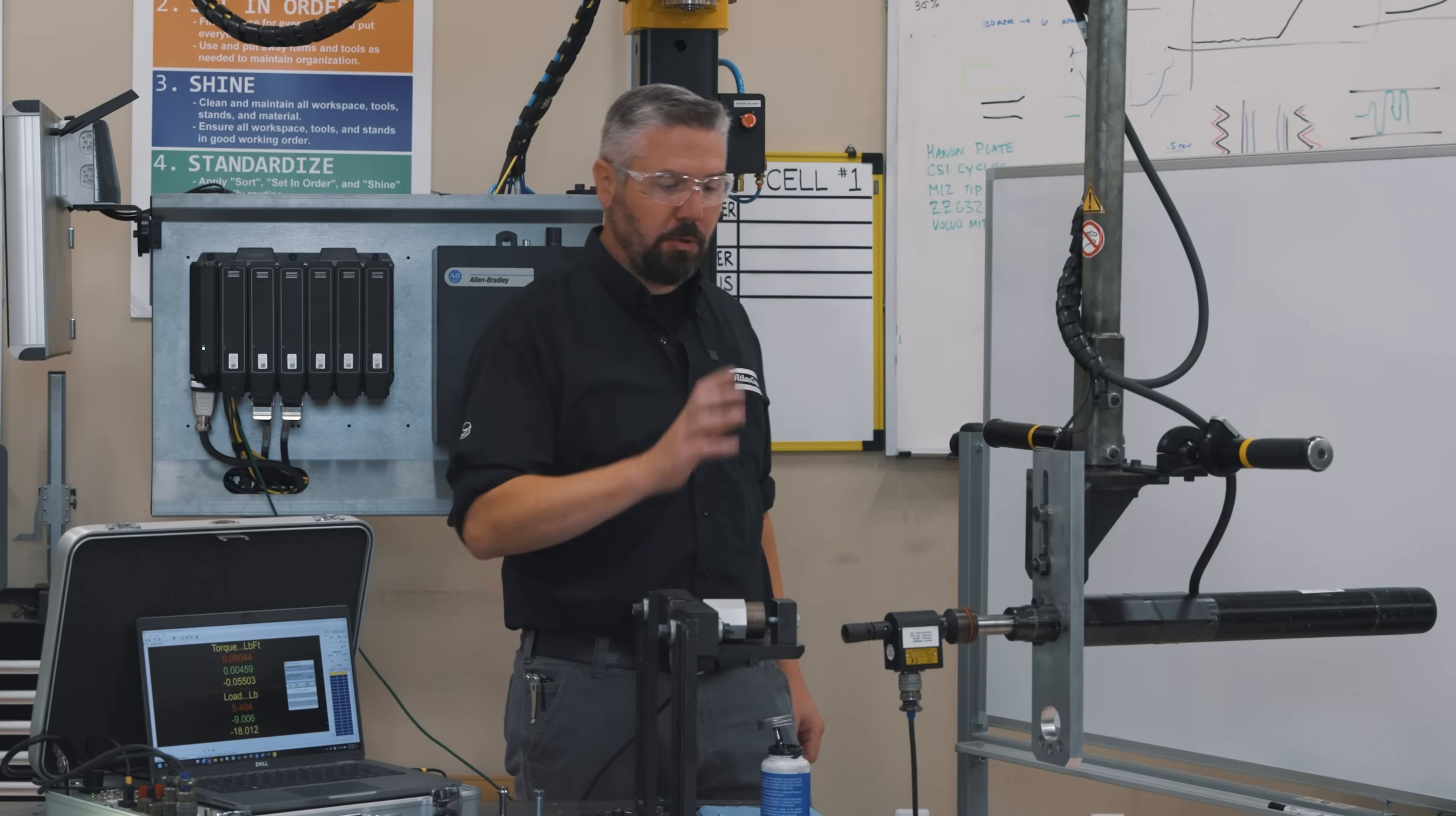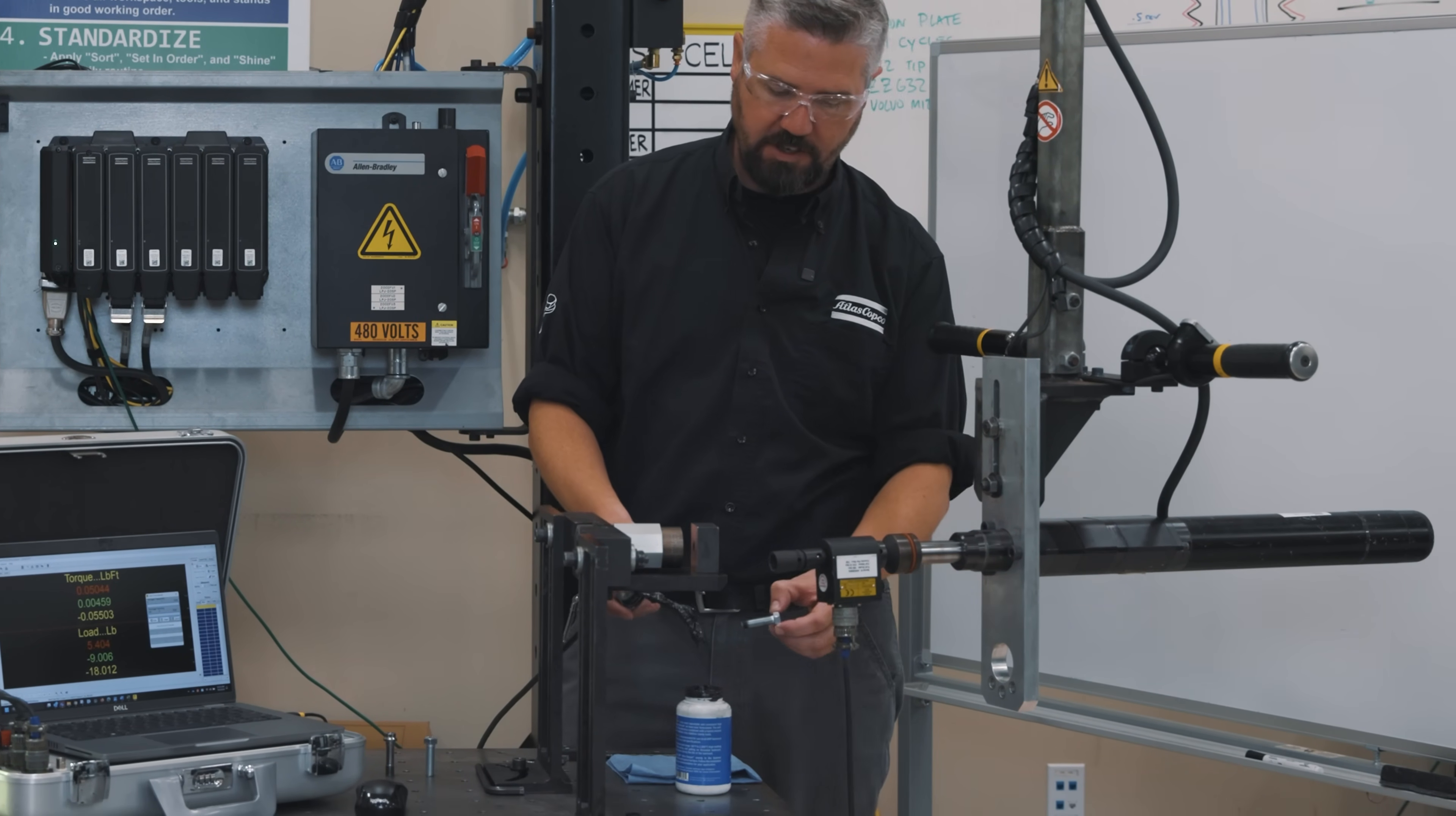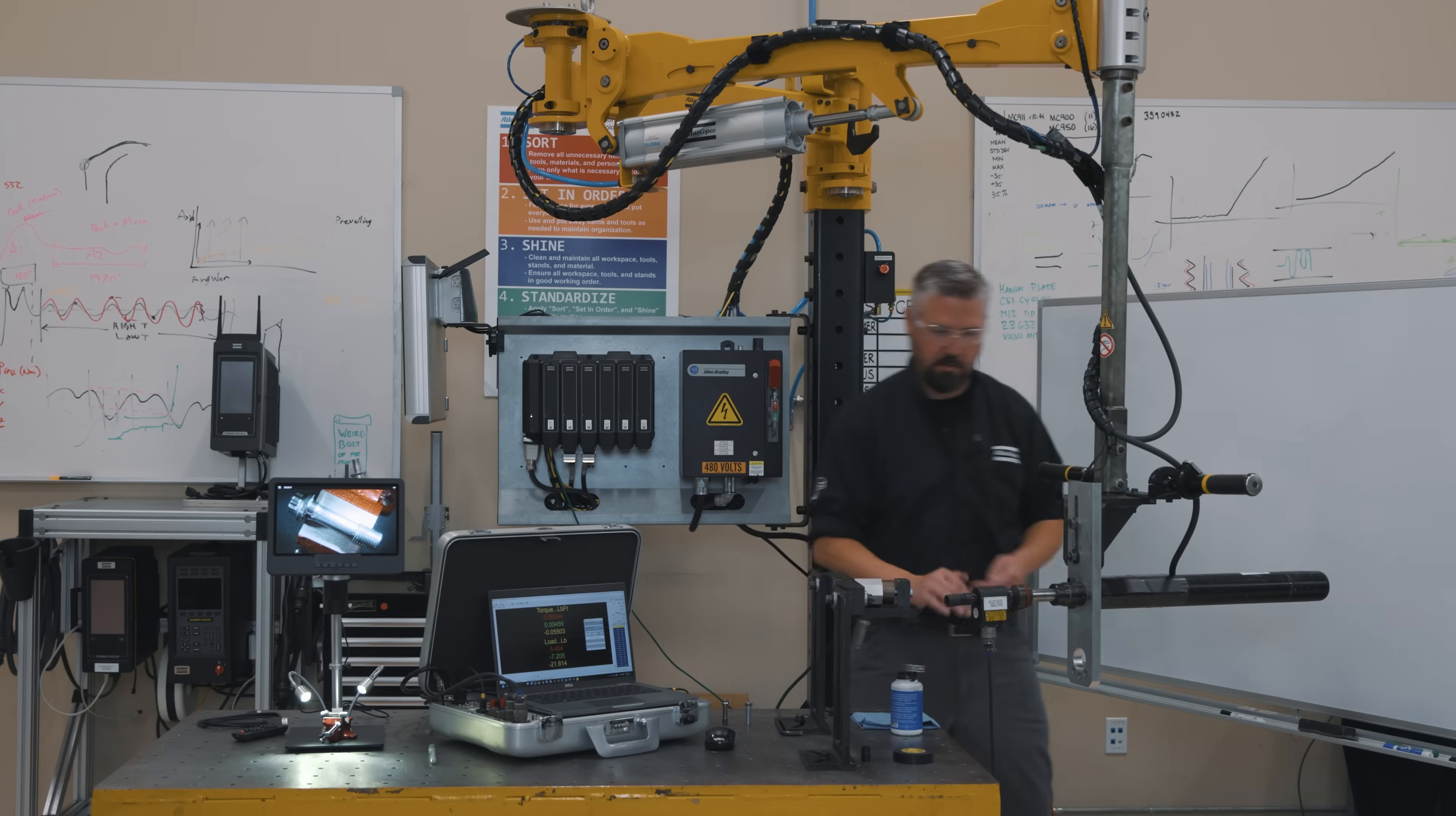We got our power tool programmed for 33 foot pounds. We're going to start by lubricating the fastener with this ultra torque assembly lube. Try not to make too big of a mess here.